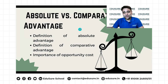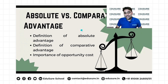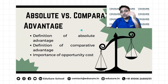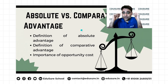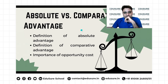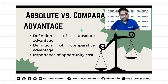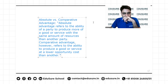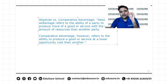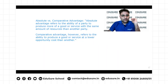Let's talk about the definitions of absolute and comparative advantage. Absolute advantage refers to the ability of a party to produce more of a good or service with the same amount of resources than another party. Comparative advantage, however, refers to the ability to produce a good or service at a lower opportunity cost than the other. Now we'll understand a good example of how to really understand comparative advantage and absolute advantage.